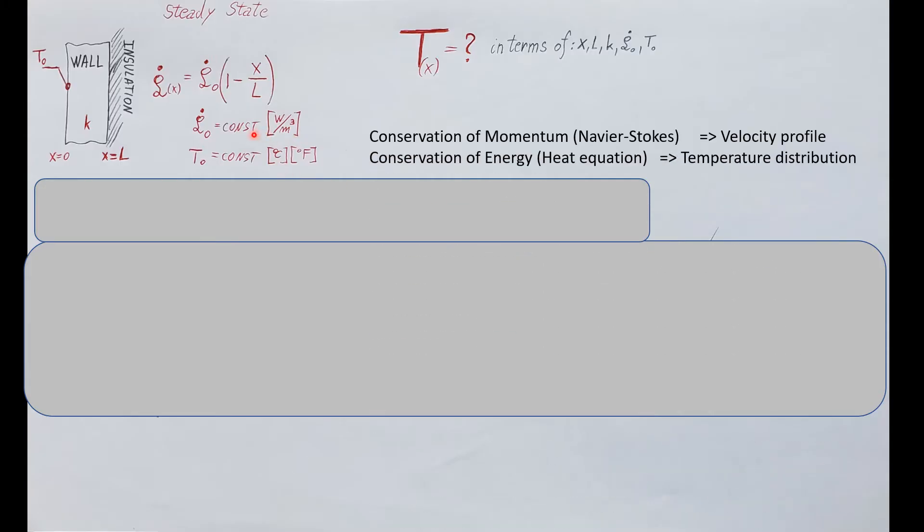Let's get started. What are we dealing with? We should know that when they are asking us to find a temperature profile or temperature distribution, that means we need to find a function that describes the temperature in this wall. Whenever we want a velocity profile we need to start with the conservation of momentum or Navier-Stokes.